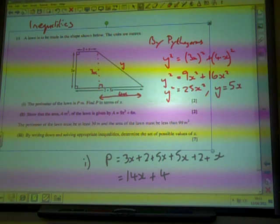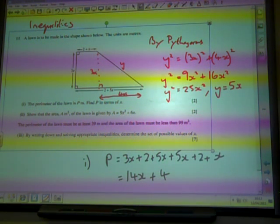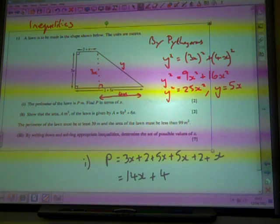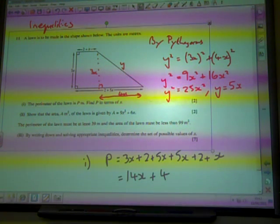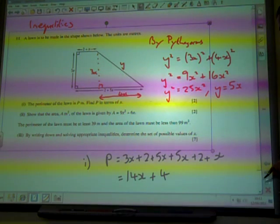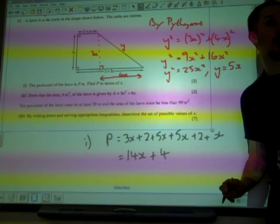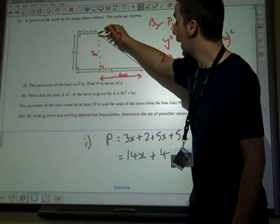Show that the area of the lawn is given by A equals 9X squared plus 6X. Well, I don't think there's an awful lot of work in this. We've got two shapes here, haven't we? We've got a rectangle that's there, and we've got a triangle.